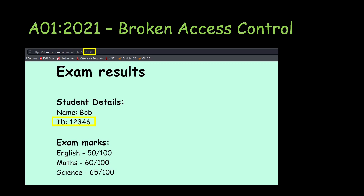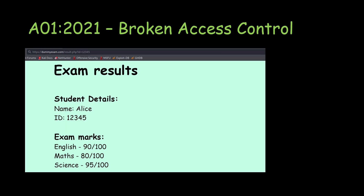Bob tries changing the `id` parameter in the URL to 12345, and he is able to get Alice's exam results — her details and marks are displayed. This is a clear example of Broken Access Control. It's an insecure direct object reference where just changing an ID in the URL exposes another user's data. This kind of issue may appear in amateur or poorly secured applications.